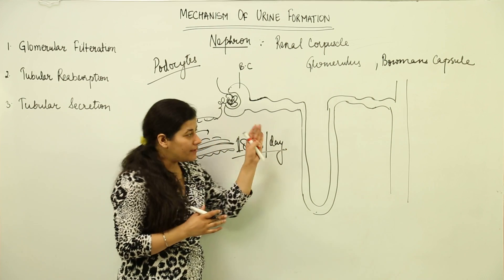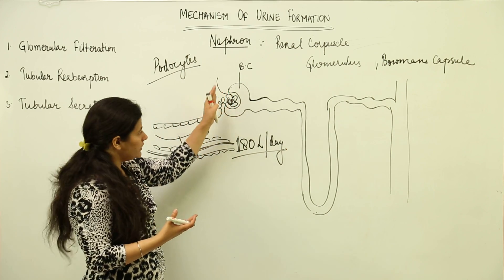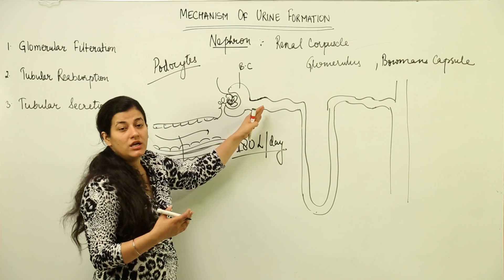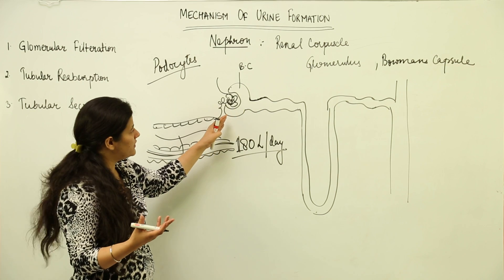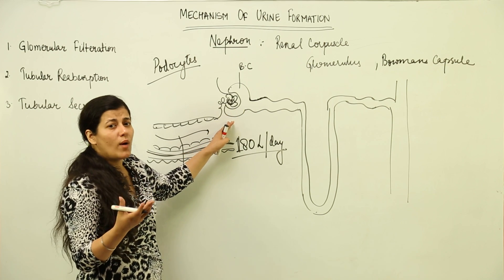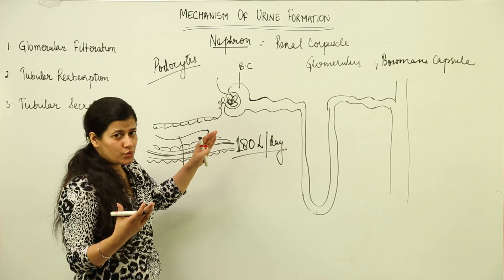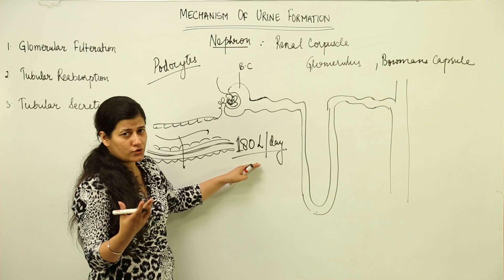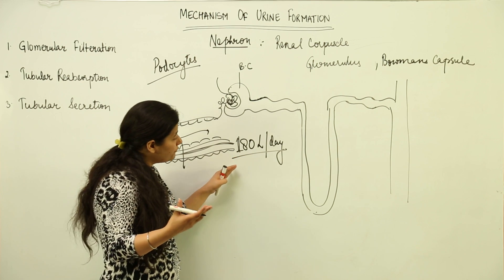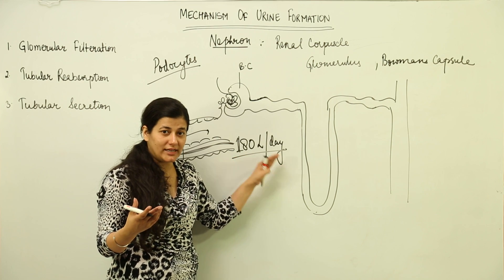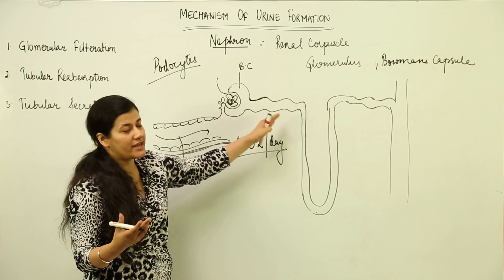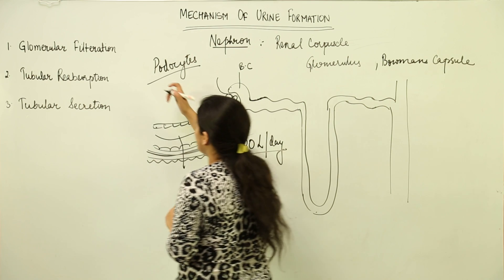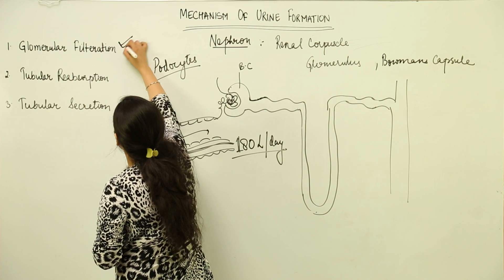The filtration rate is as much as 180 liters per day — 180 liters of blood is put into the nephrons. However, the urine secreted is less than 1.5 to 2 liters per day. A human excretes only 1 to 2 liters of urine per day while filtration is 180 liters, meaning maximum reabsorption must take place inside the nephrons.